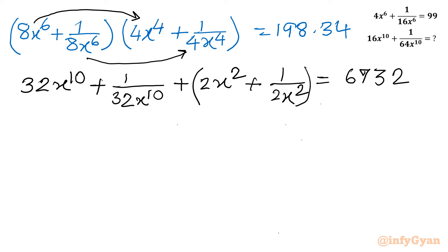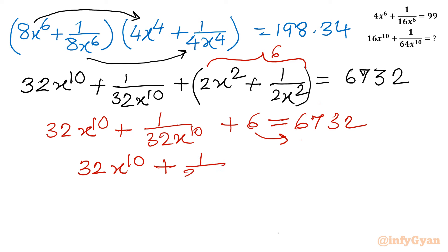Now this is A, so I can put the value here. A was 6. So I can write 32x^10 plus 1 over 32x^10 plus 6 equals 6732. Now I will take this 6 to the right, so it will become 32x^10 plus 1 over 32x^10 equals 6726.